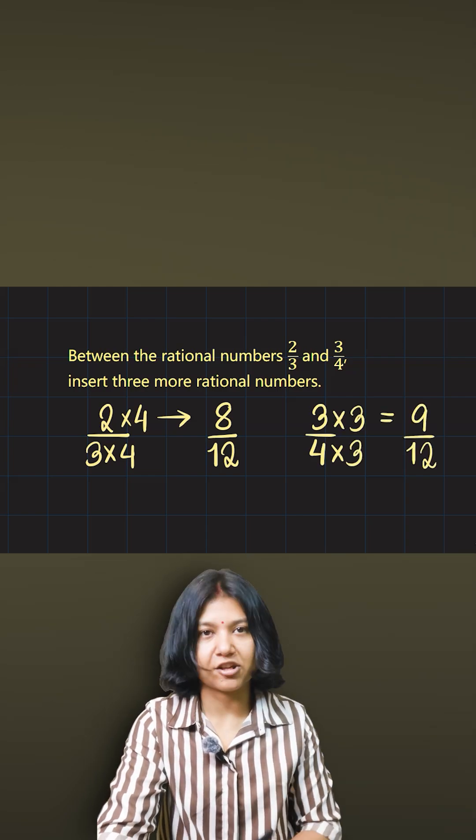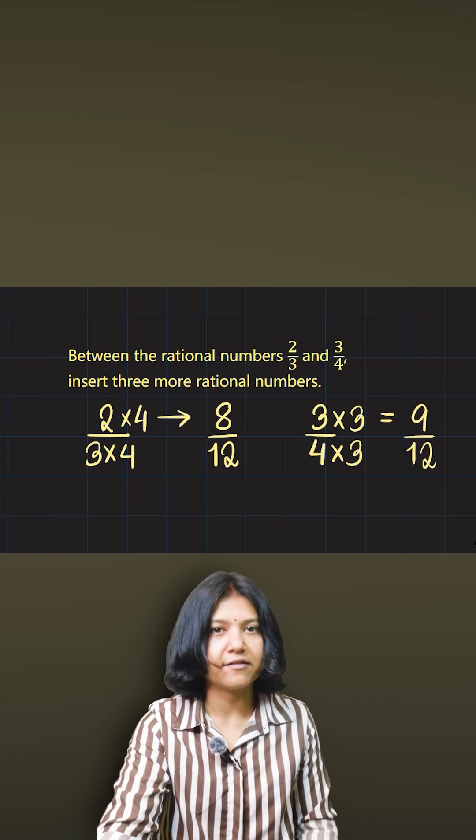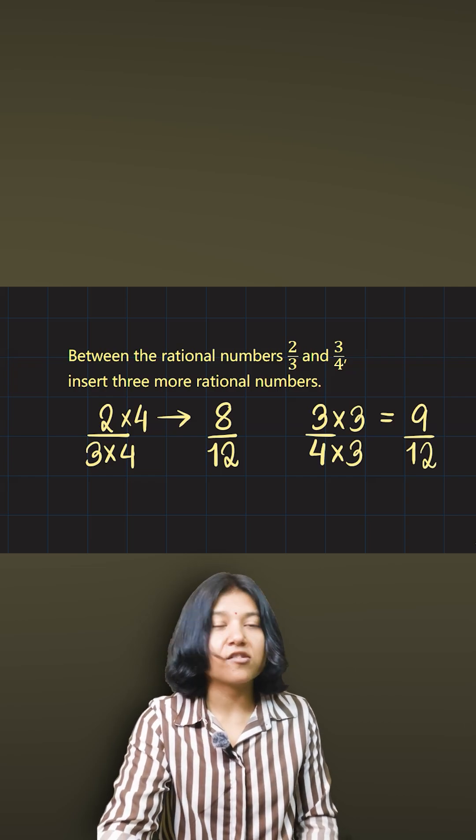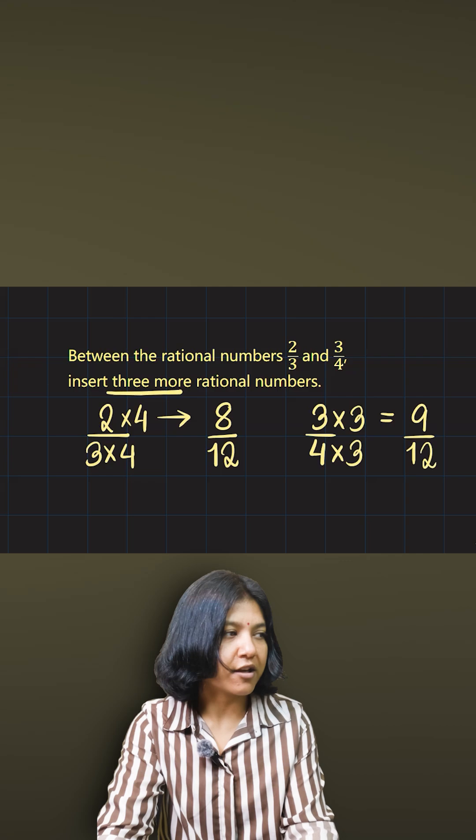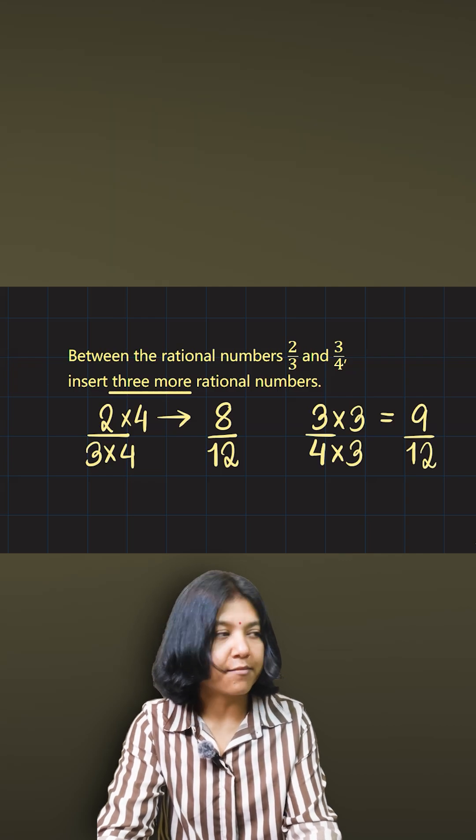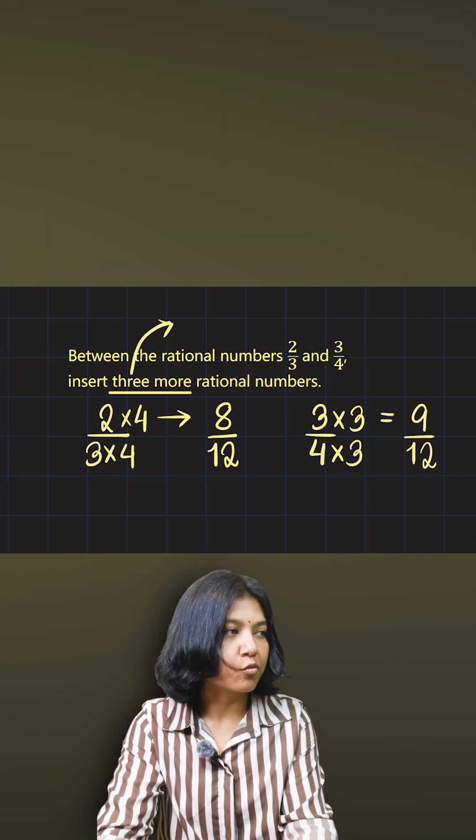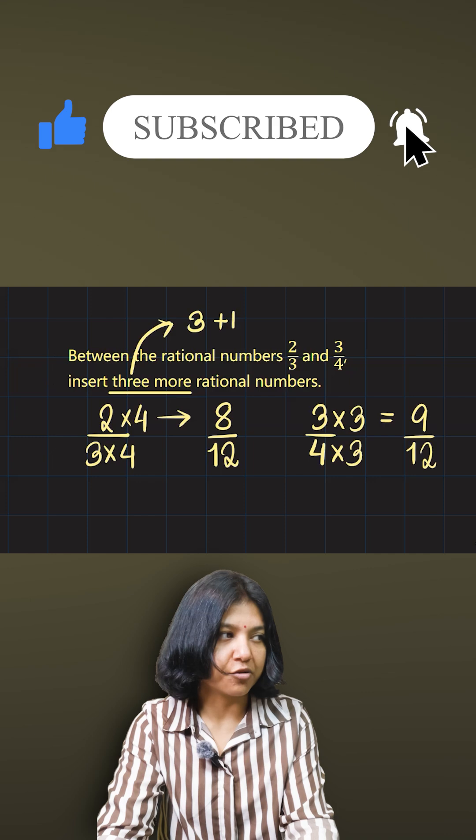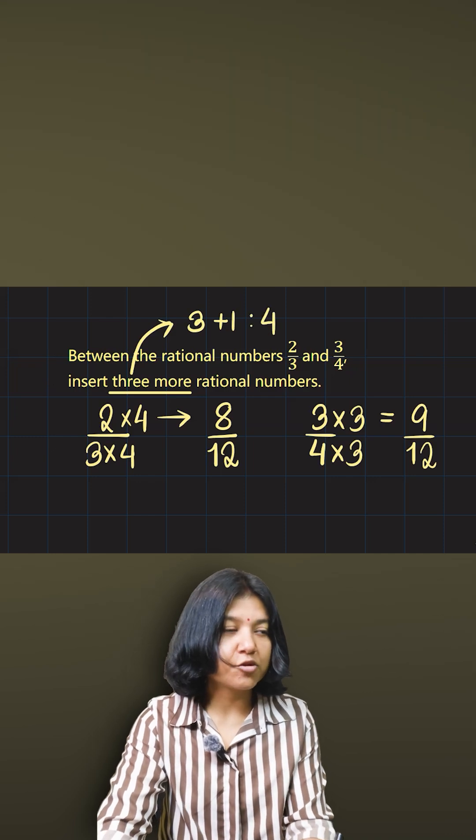Now the thing is, I just got the two closest rational numbers—8/12 and 9/12. So now to insert three more rational numbers, the exact way you do it is: because you are finding three numbers, you'll add one to that number. So that gives me four. I'll take the two fractions I got.